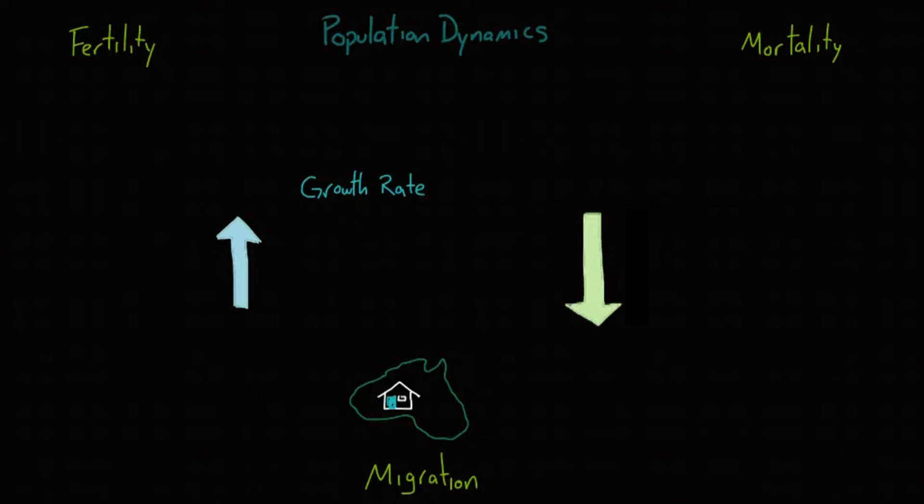In order to measure these three factors, we use rates to measure the number of people who are born, the number of people that move out of or into a different country, and the number of people who die in a certain period of time. Usually, we measure birth, migration, and death rates over a year's worth of population change, because it is enough time that an obvious change is visible, but not so much time that we miss trends in how the population changes.